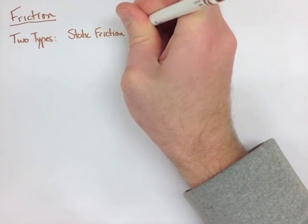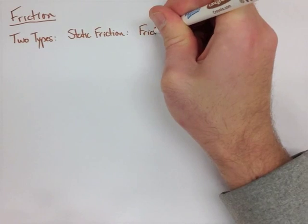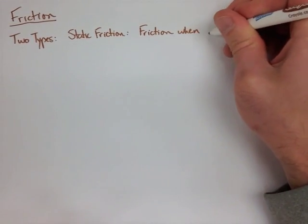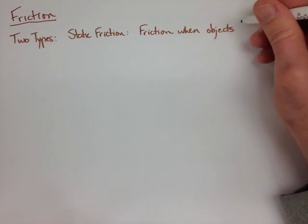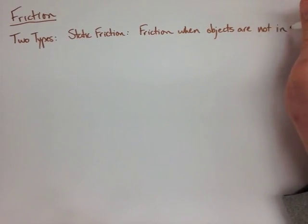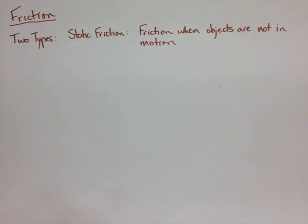When we look at static friction, this means that the friction is being applied to something when it's not moving. So there's no motion. Static means not moving, it's still.